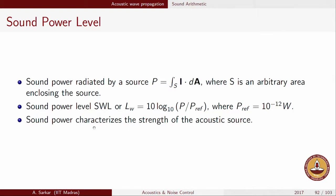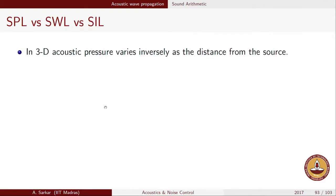Sound power determines how strong the acoustic source is, irrespective of the location of the receiver and irrespective of the orientation of the receiver. We have now defined three different quantities: sound pressure level (SPL, abbreviated L_P), sound intensity level (SIL), and sound power level (SWL, abbreviated L_W).